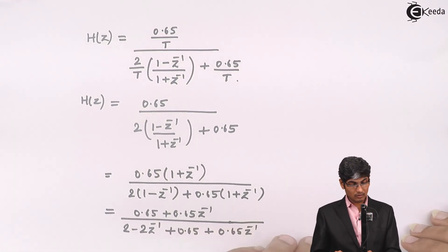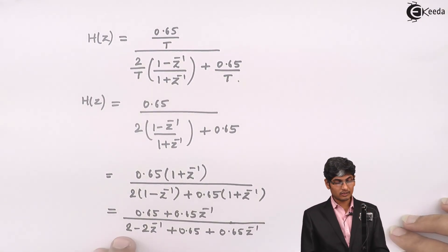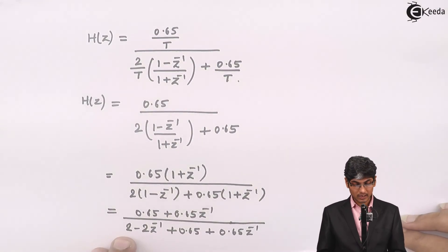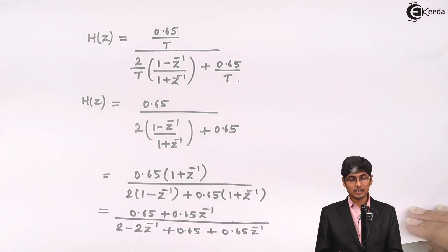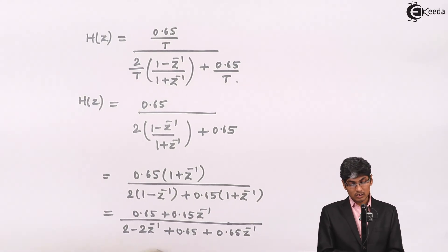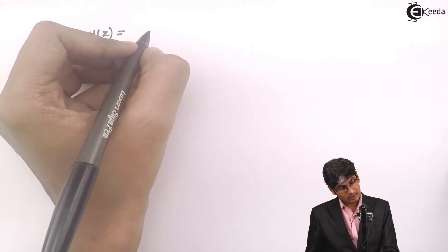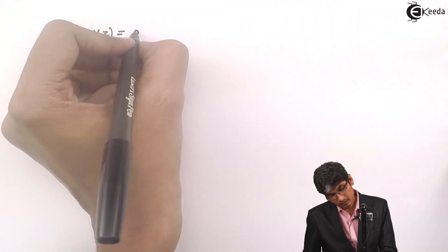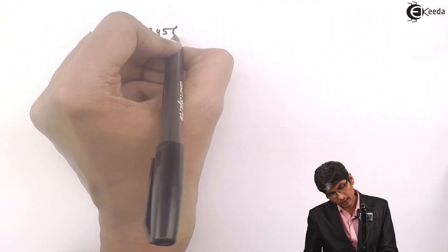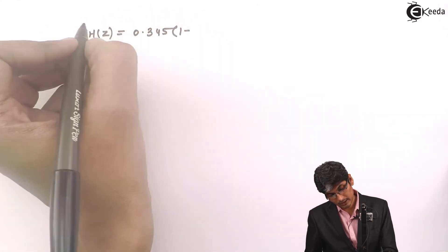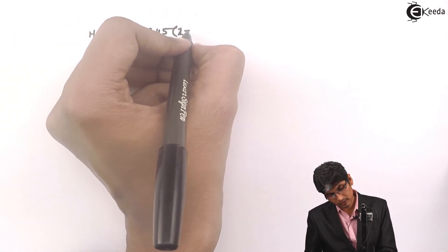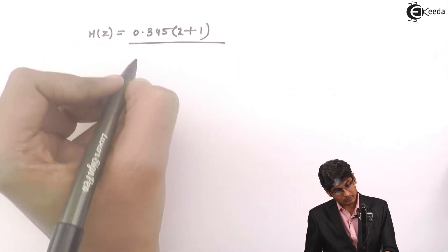After solving this, 0.65 with 2 will give 2.65, and adjusting all the terms, the ultimate answer that we will get is H(z) which is equal to 0.345 times (z + 1) divided by (z - 0.509).